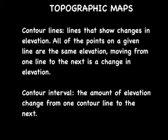Moving from one line to the next is a change in elevation. That change in elevation is called the contour interval — that is the amount of elevation change from one contour line to the next. Different topographic maps will have different contour intervals, so you must find that information generally in the key or legend of the map.